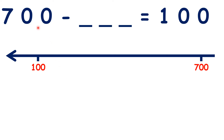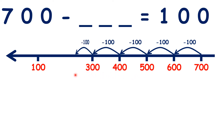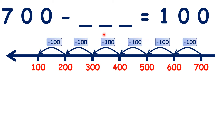So what do you have to subtract from 700 to get 100? We could count on a number line, counting back in hundreds from 700: 600, 500, 400, 300, 200, 100 — we subtracted 100 six times, so the answer is 600.